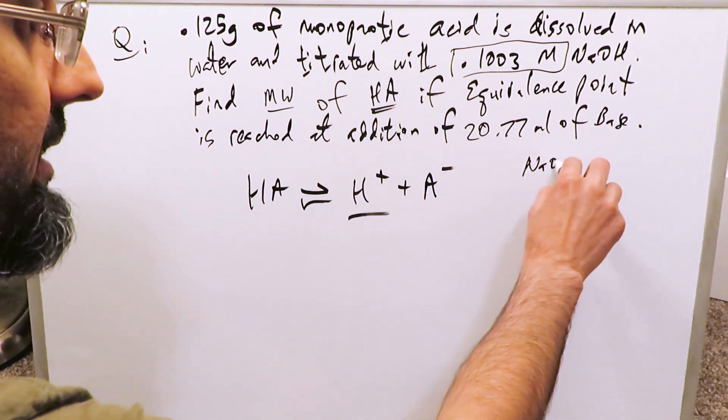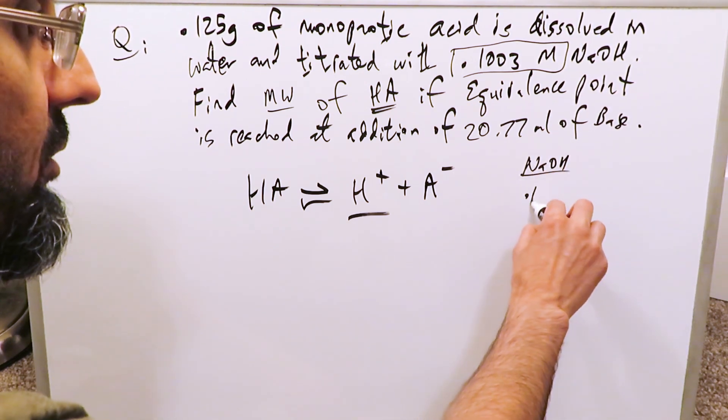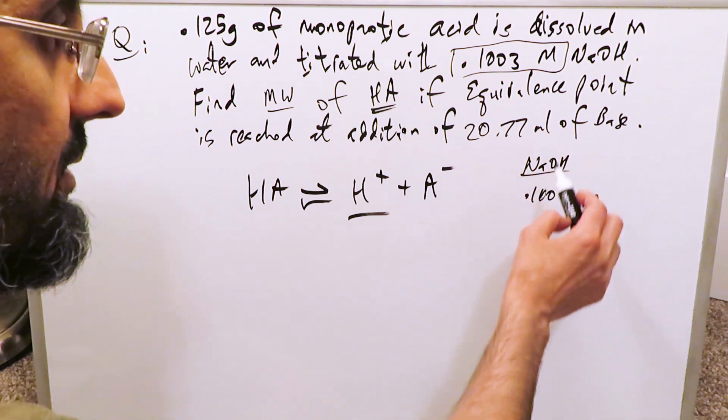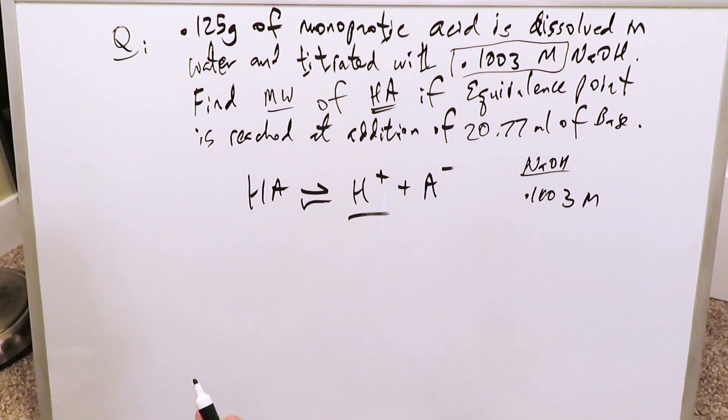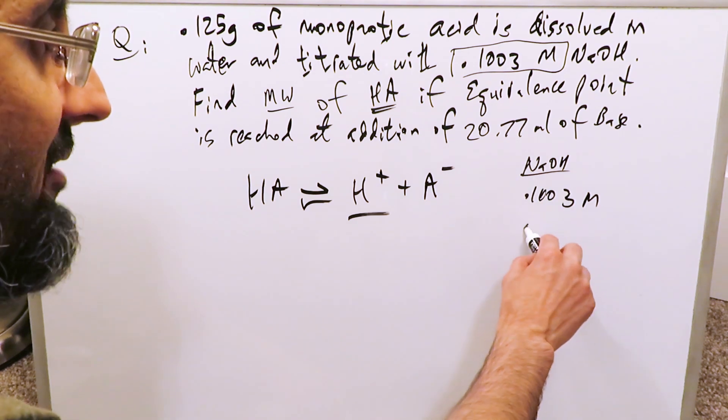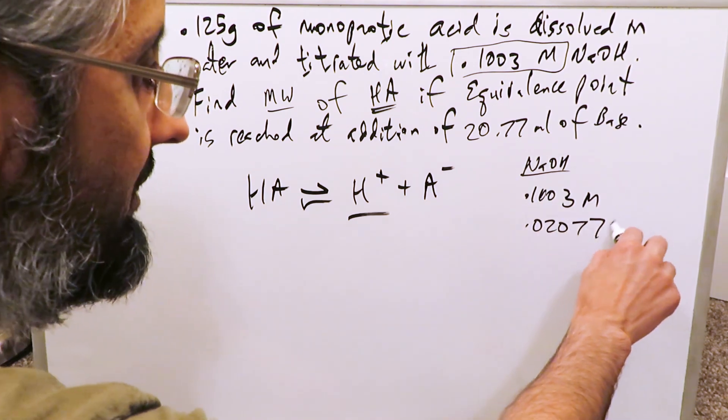What do we have about sodium hydroxide? In terms of sodium hydroxide, it's 0.1003 molar, and it's 20.77 milliliters of base. But remember, everything has to be written here in liters. You divide this by 1,000, you'd have 0.02077 liters.